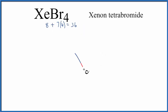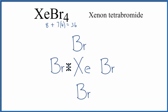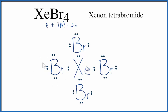Xenon is the least electronegative, so we'll put that in the center of our Lewis structure, and then put 4 bromines around it. We have 36 total valence electrons. We'll start by putting pairs of electrons between atoms to form chemical bonds, and then complete the octets on the bromines. At this point everything has an octet — each atom has 8 valence electrons — so it seems like a good Lewis structure. Except we're only using 32 valence electrons, and we have 36 valence electrons for the XeBr4 Lewis structure.